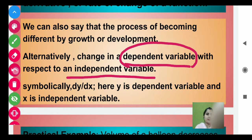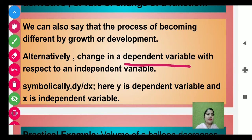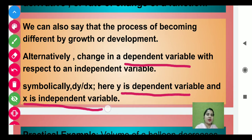Symbolically we can write dy over dx. Here y is the dependent variable and x is the independent variable. Hum jab derivative find karte hain, jis function ka — that is the dependent variable. Aur jis variable ki respect mein hum derivative find karte hain, that is called the independent variable.